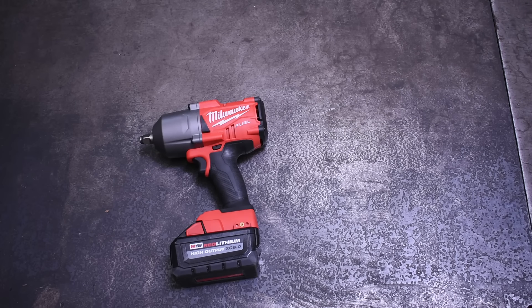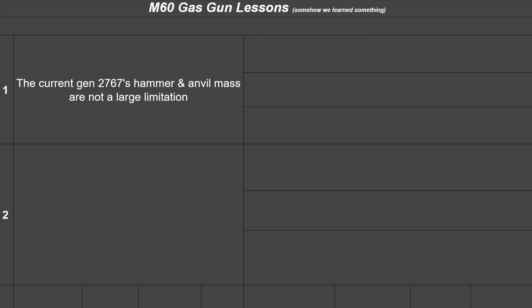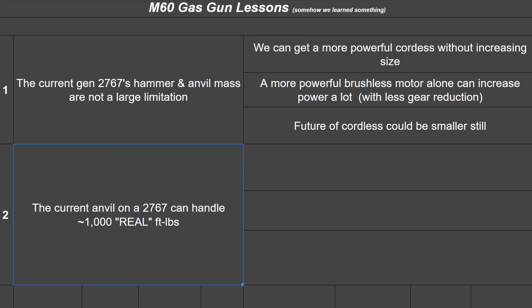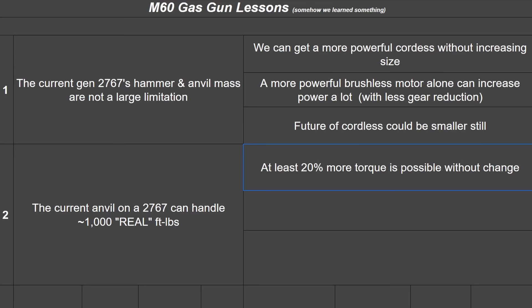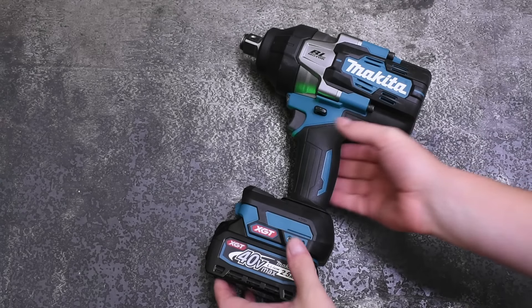Believe it or not, testing the M60 gas gun has taught us a few things that you can take home. The hammers inside the M18 2767 are not currently the technological and space packaging limitation of a gun like that. There is of course a ceiling to these things once that mass is fixed and not changing, but assuming a gen 3 Milwaukee high torque was just a more powerful brushless motor, or like an M36 36 volt variant they're starting to dabble with, it would still make more power. Saying these tools don't need to be bigger to be better is always good.